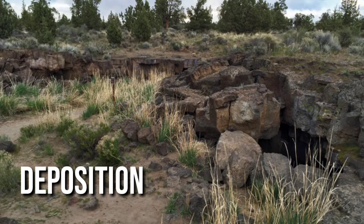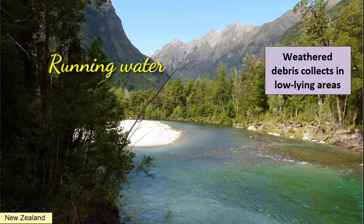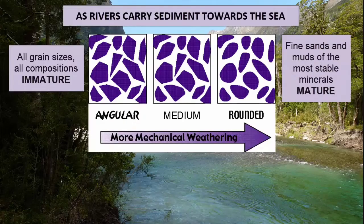Once rocks have weathered, the weathered pieces can collect on Earth's surface in low-lying areas. They can get picked up by erosional agents — running water, glaciers, wind, gravity, or humans — and moved along to a new surface where they settle out. During the process of movement, the erosional processes cause the pieces to continue breaking down chemically and physically, such that after many hundreds of years and many hundreds of kilometers from their place of origin, what's primarily left are the finest sands and muds made of the most resistant material.